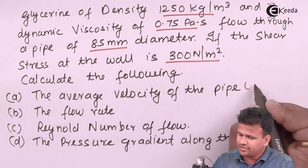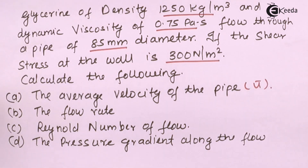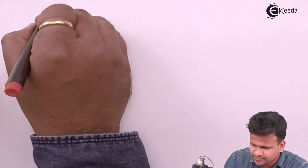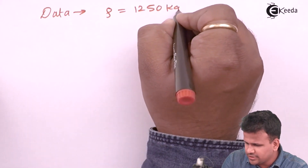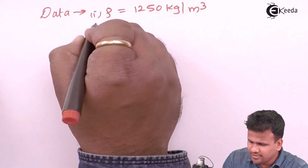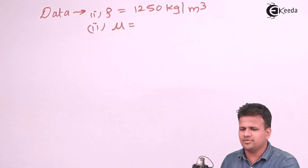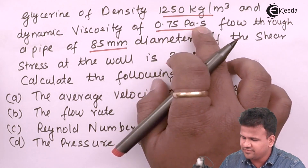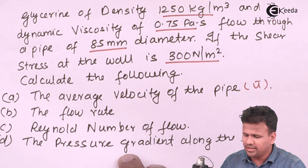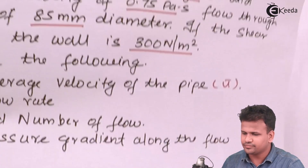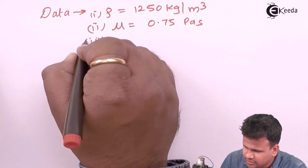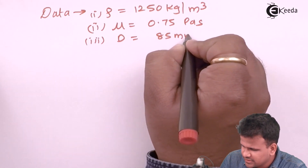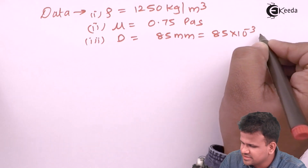First, we have to calculate the average velocity, that is U bar. From the given problem, let us write down the data: density rho equals 1250 kg per meter cube, viscosity mu equals 0.75 Pascal seconds, and diameter equals 85 mm, which can be written as 85 × 10⁻³ meters.